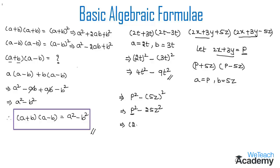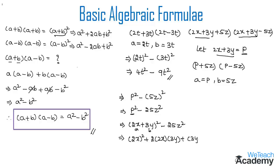Now let us replace p with (2x + 3y). On replacing, we get (2x + 3y) whole squared minus 25z squared. We observe that (2x + 3y) whole squared is in the form (a + b) whole squared, so a = 2x and b = 3y. Writing this as a squared plus 2ab plus b squared, we get 4x squared plus 12xy plus 9y squared minus 25z squared.